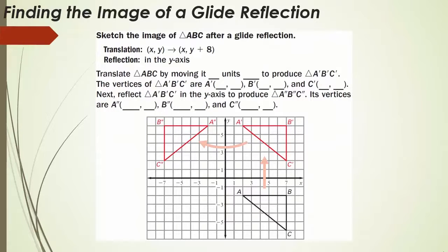Example 1: finding the image of a glide reflection. Sketch the image of triangle ABC after a glide reflection. Remember, glide reflection means we are first going to do a translation and then a reflection. According to what we're given for the translation, the X coordinate has no addition or subtraction, meaning there's no change in X. All Y values are going to move up by 8, so we translate triangle ABC 8 units up to produce triangle A'B'C'.